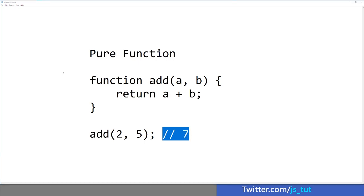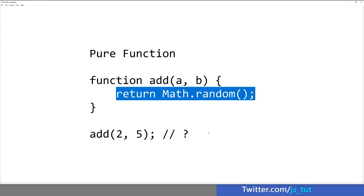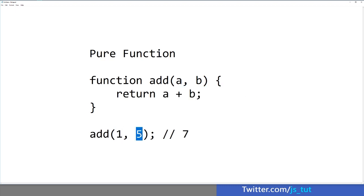How would you make this function impure? Well, you can use the math object in JavaScript and return a random value. At this point, it's no longer a pure function because even though we're passing the same parameters into the function, the return value is always going to be different. A pure function always returns predictable results.